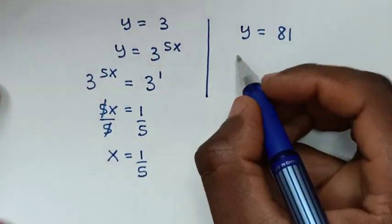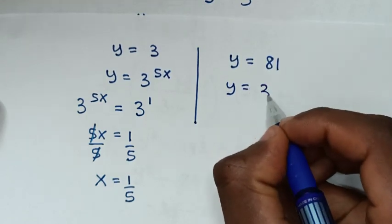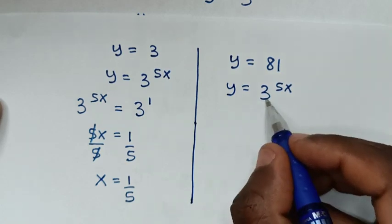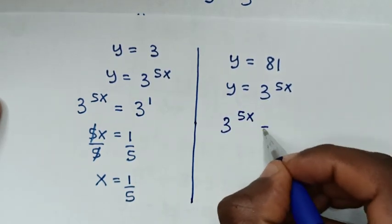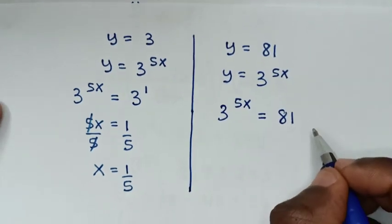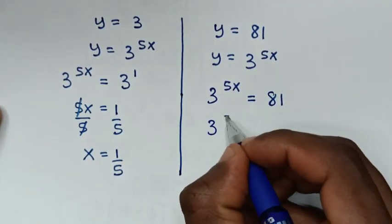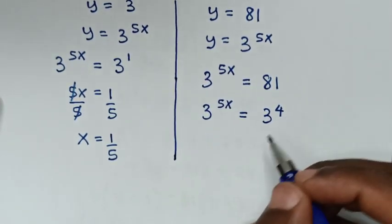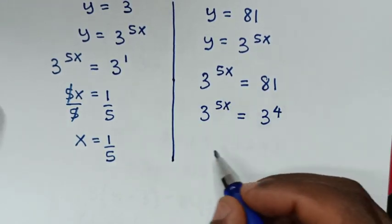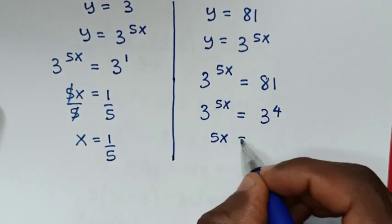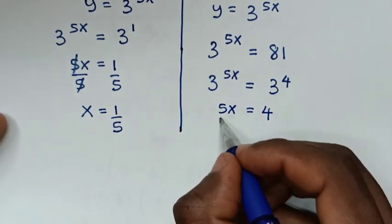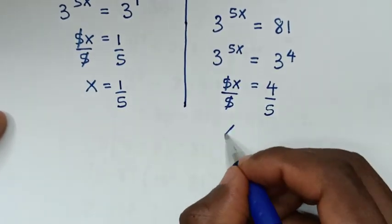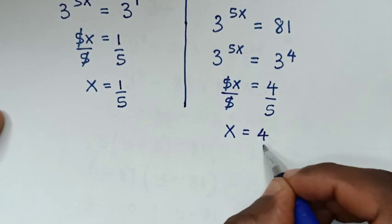From the second solution, y equals 81, and since y equals 3 power 5x, we get 3 power 5x equals 81, which equals 3 power 4. Comparing the powers, 5x equals 4. Dividing both sides by 5, x equals 4 over 5.